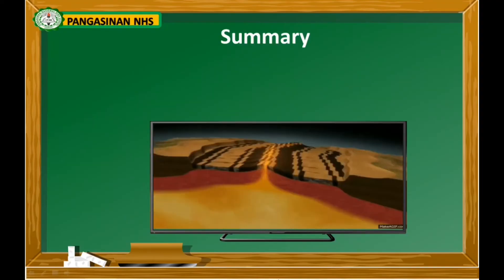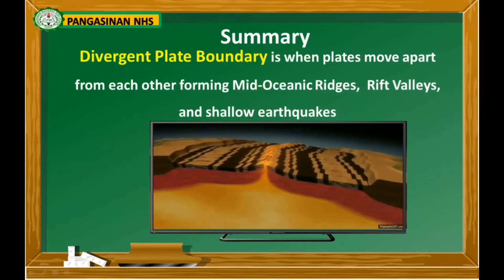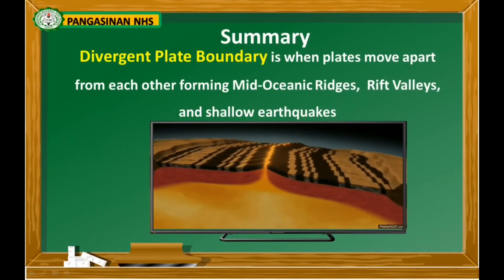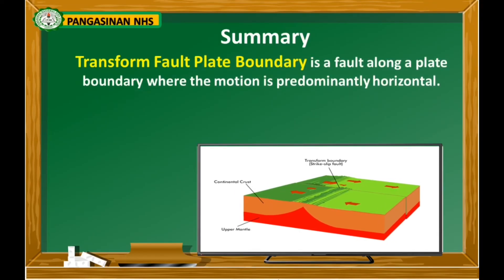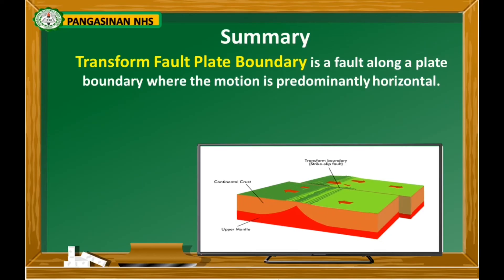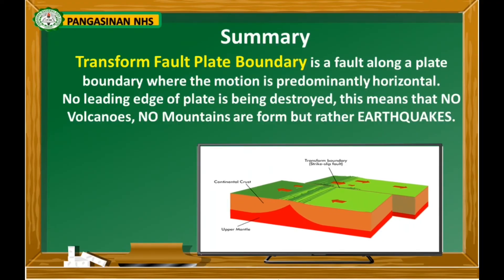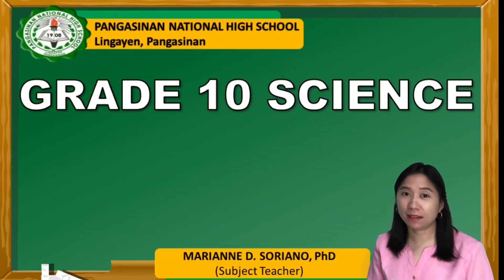Let's summarize what you have learned. Divergent plate boundary is when plates move apart from each other, forming mid-oceanic ridges, rift valleys, and shallow earthquakes. Transform fault plate boundary is a fault along a plate boundary where the motion is predominantly horizontal — no leading edge of a plate is destroyed, meaning no volcanoes, no mountains are formed, but rather earthquakes. I hope you enjoyed and learned something from our lesson. This is Ma'am Marian Soriano. See you in our next lesson.